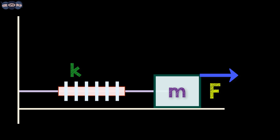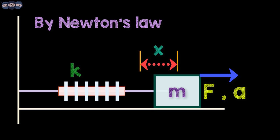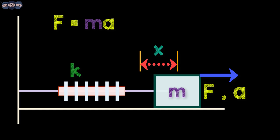When force F is applied to a mass M, it is displaced in the direction of the force by amount x with acceleration a. Using Newton's law and writing the force conserving equation, we get F equals MA which equals Fs.